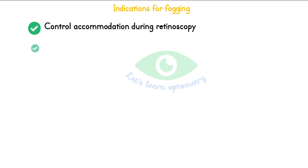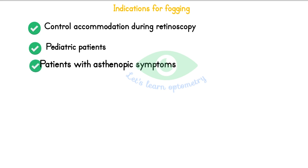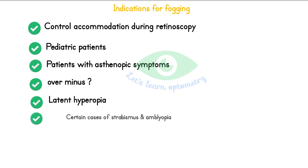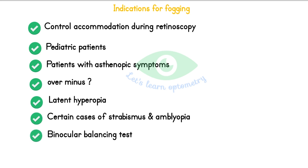Indications — these are the circumstances where we do fogging: to control accommodation during retinoscopy; refraction of pediatric patients who have excessive accommodation; refraction of patients with asthenopic symptoms; when the optometrist has reasonable suspicion of a patient with an over-minus prescription; refraction of a patient with latent hyperopia; in certain cases of squint and amblyopia; during binocular balancing test, which we do to balance the accommodation between both eyes; and used in astigmatic dial or fan test.